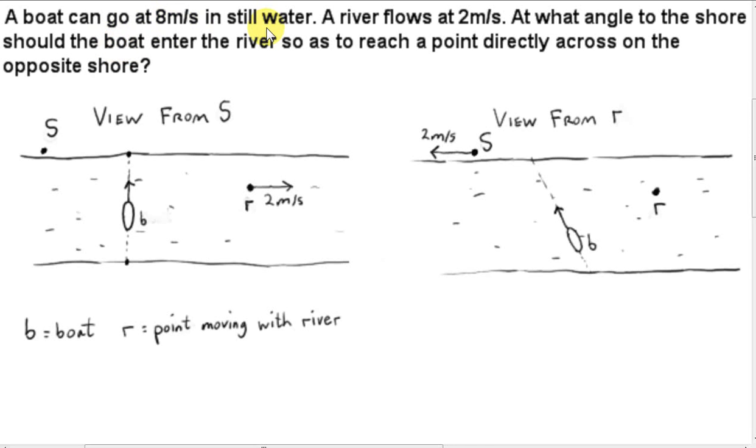A boat can go at 8 meters per second in still water. A river flows at 2 meters per second. At what angle to the shore should the boat enter the river so as to reach a point directly across on the opposite shore?